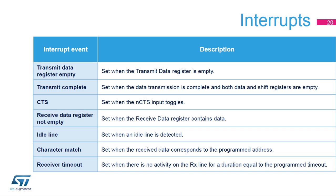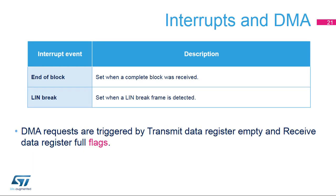Several events can provide an interrupt. The transmit data register empty flag is set when the transmit data register is empty and ready to be written. The transmit complete flag is set when data transmission is complete and both data and shift registers are empty. The CTS flag is set when the N-CTS input toggles. The receive data register not empty flag is set when the receive data register contains data ready to be read. The idle line flag is set when an idle line is detected. The character match flag is set when the receive data corresponds to the programmed address. The receiver timeout flag is set when there is no activity on the RX line for a programmed duration. The end of block flag is set when a complete block is received. The LIN break flag is set when a LIN break frame is detected. DMA requests can also be generated when receive buffer not empty or transmit buffer empty flags are set.